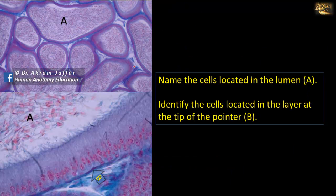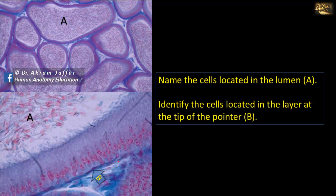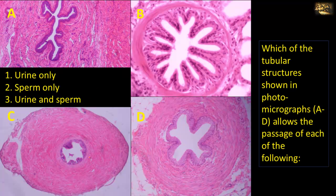This is a section of the epididymis showing a highly convoluted tube containing sperms undergoing spermiogenesis. The epididymis serves for the storage and maturation of sperms. Away from the lumen, flattened smooth muscle cells are present in a single layer. As the tube becomes larger toward the vas deferens, the amount of surrounding smooth muscle increases, forming a very thick layer. These smooth muscle fibers undergo rhythmic contraction during ejaculation to push sperms from the epididymis into the vas deferens and ejaculatory duct.